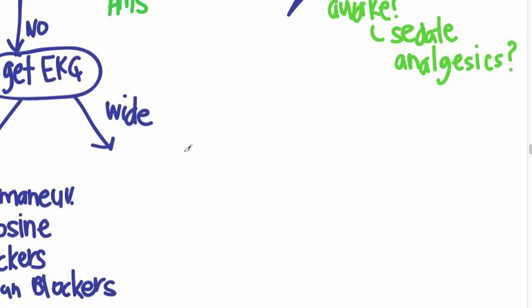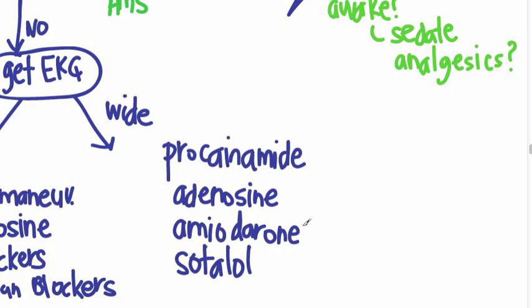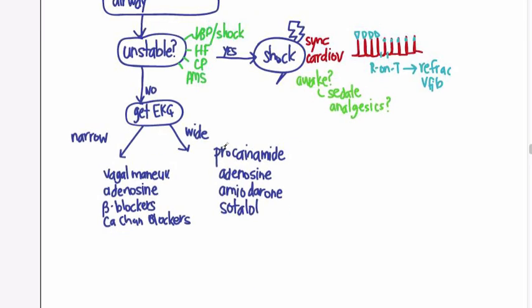Now if the QRS is wide, you want to use other drugs such as procainamide. You could try adenosine; this is a very short-acting drug, and so even if it doesn't work well in this situation, it might be short-acting and so not cause any harm. Amiodarone and sotalol. So these things we would do for wide complex. And if none of this works, then I'd probably call a cardiologist and figure it out.